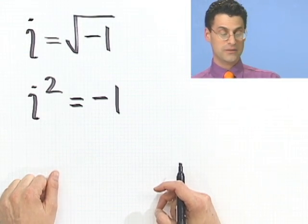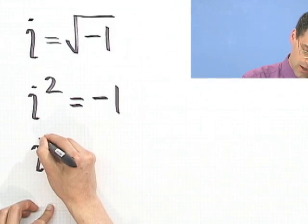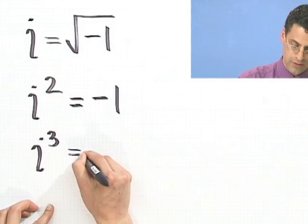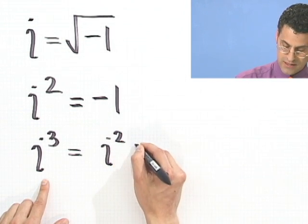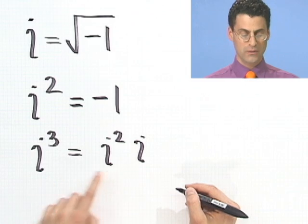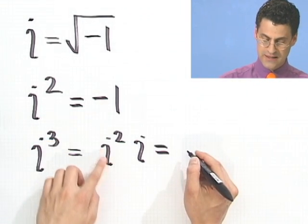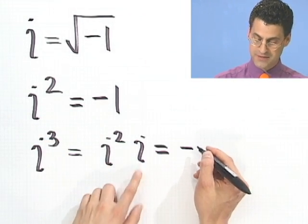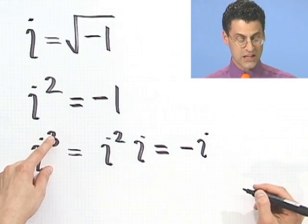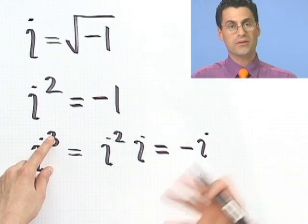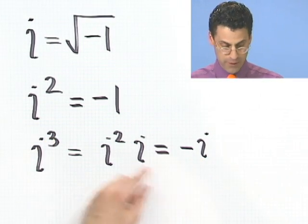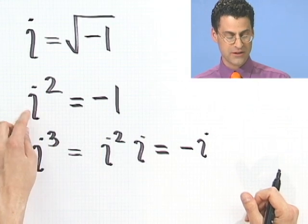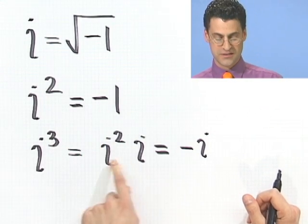What would i cubed equal? Let's figure that out. One way of thinking about i cubed is saying, well, it's just i squared times another i. i squared we know is negative 1, so in fact this is just negative 1 times i, so it's negative i. i cubed is simply negative i, because i squared is just negative 1, and so this just contributes a negative sign.